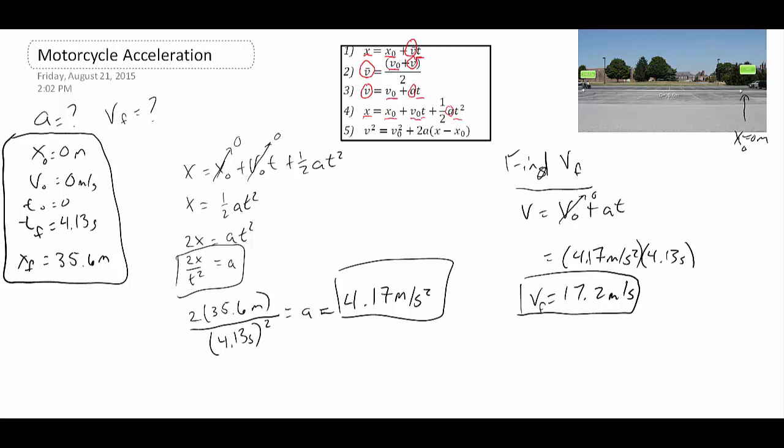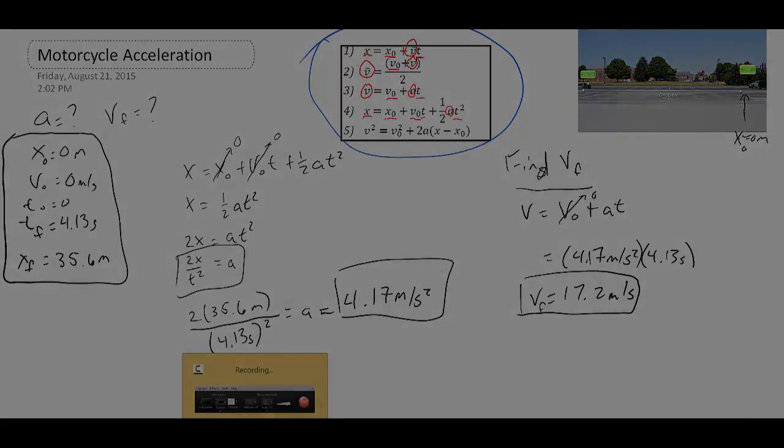There are many other ways you could have found the final velocity — using equation five, or a combination of equations one and two. With all these problems, do the same thing every time: write out your equation set, circle the things you don't know, underline the things you do, and it will become clear which equations to use to find your answer. I hope that was helpful, and I'll see you in class.